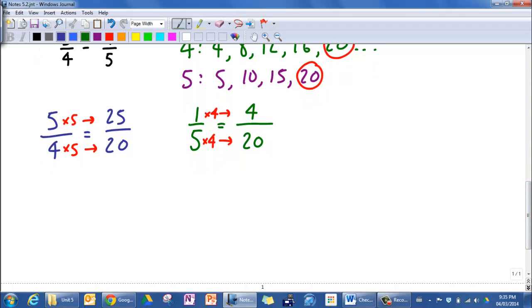Now my last step is to just go ahead and do my subtraction. So twenty-five over twenty minus four over twenty. Remember that my denominator stays the same, and I just subtract the top. So twenty-five minus four is twenty-one.